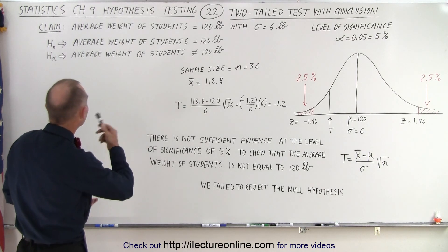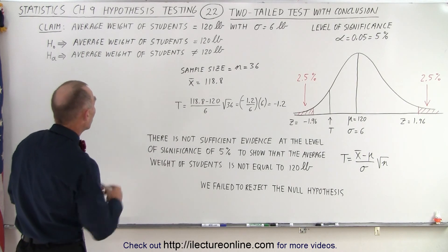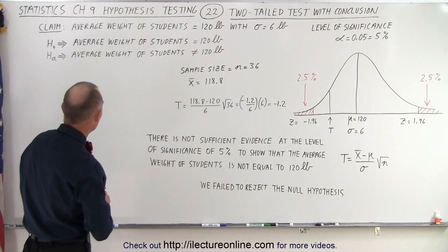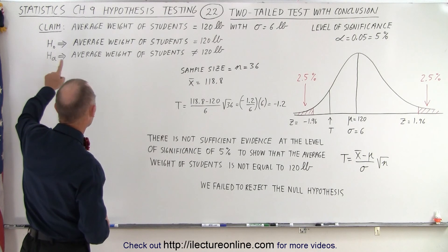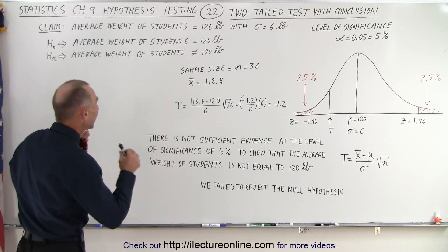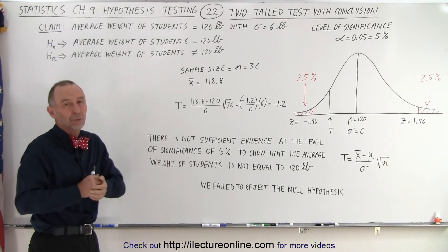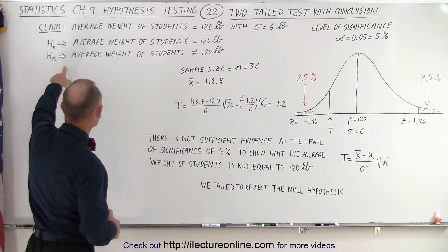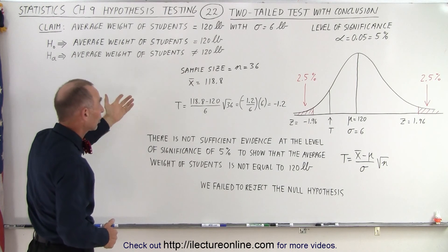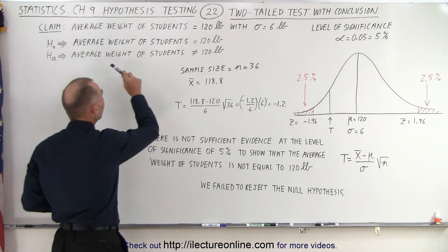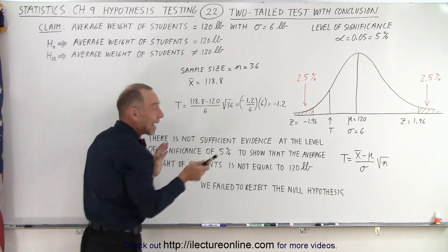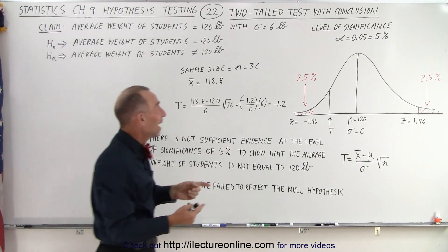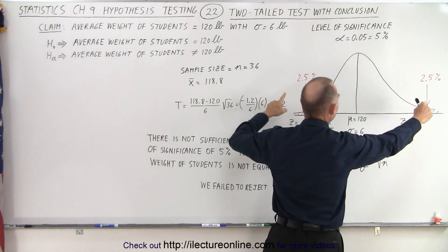Let's go back to the claim that the average weight of students is 120 pounds with a standard deviation of 6 pounds. The null hypothesis says that the average weight of students equals 120 pounds — what we're trying to do is show whether that's true or not. The alternate hypothesis is that the average weight of students is not equal to 120 pounds. With the null hypothesis being equal to 120 pounds, we therefore have what we call a two-tailed test.